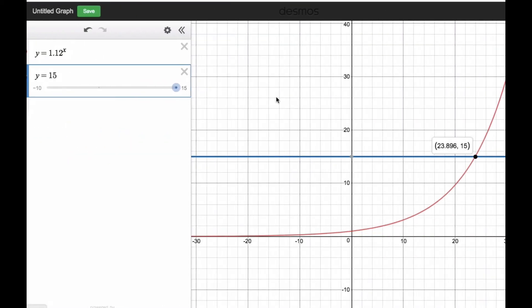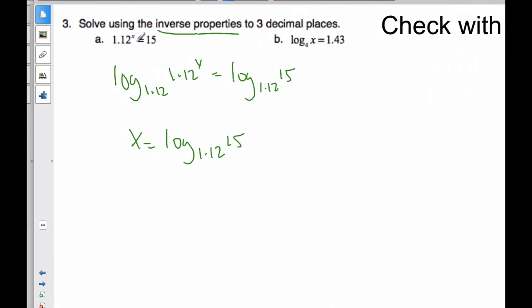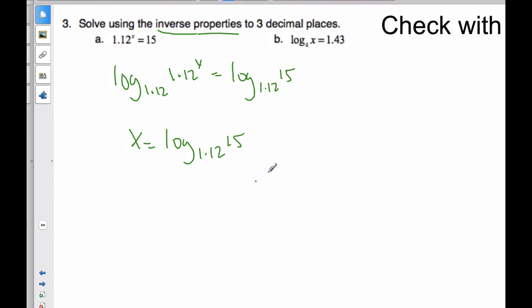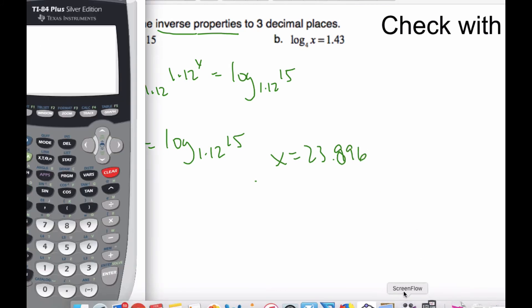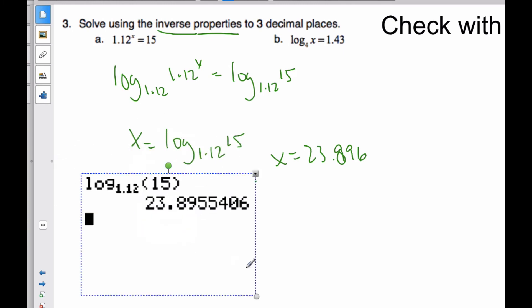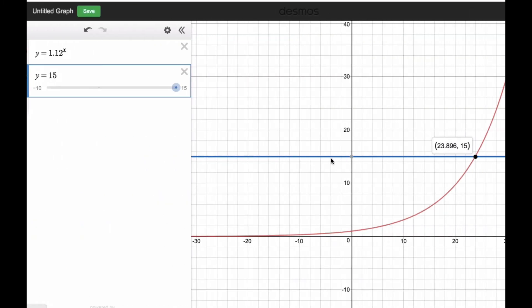And if I want to check this, I plug it into my calculator. So one side is 1.12 to the power of x. The other side is 15. And I see that I get 23.896. So Desmos says x is 23.896. If I check my calculator, I'm going to go math, go to my log base. I'm going to 1.12 and 15. And I can see that there is also the same value as Desmos got it. Either way works.